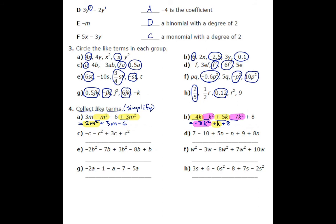Next, we've got part C. Again, we have some like terms. I'm going to combine the negative C with the positive 3C, and I'm also going to combine the negative C squared with the positive C squared. This is a special case: with positive 1 adding with negative 1, that adds to 0. So I can write 0C squared, but there's no point — it's not there. All that we're left with is positive 3 plus negative 1, which gives us positive 2C.